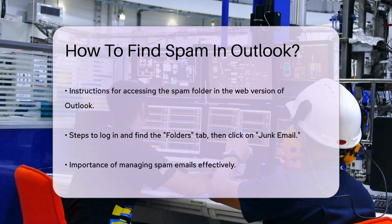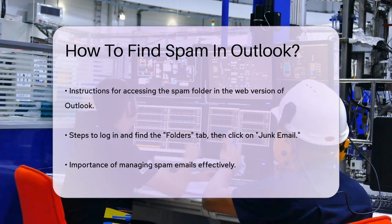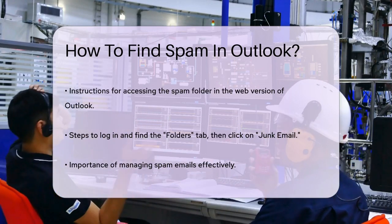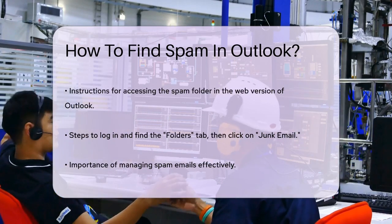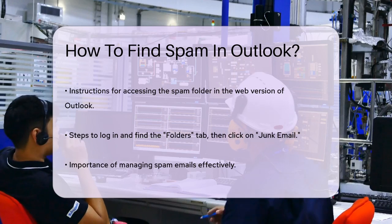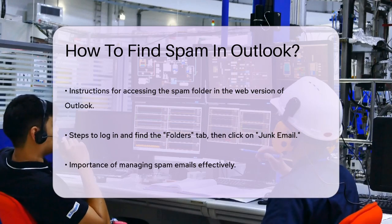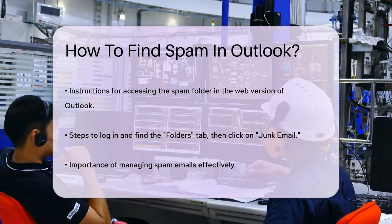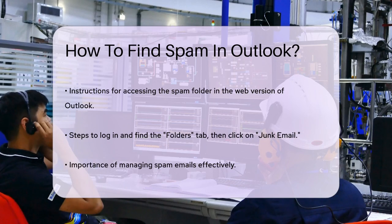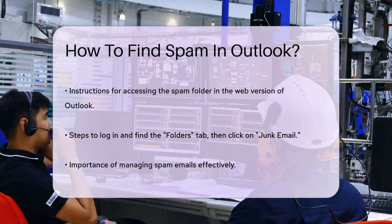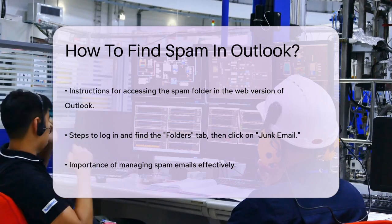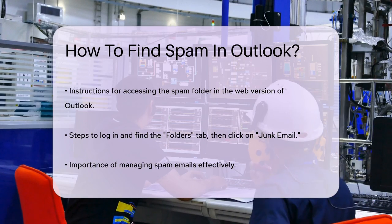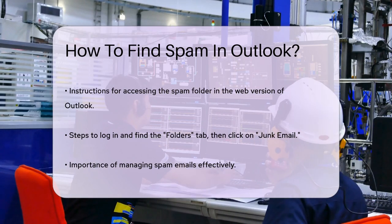It's also important to know how to manage these spam emails. If you find an email in your spam folder that shouldn't be there, you can mark it as Not Junk. To do this, select the email, go to the Home tab, click on Junk, and then choose Not Junk from the drop-down menu. This will move the email back to your inbox.